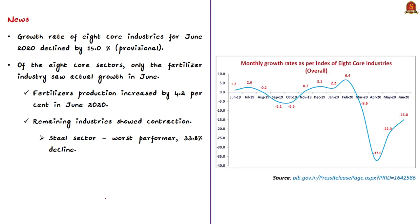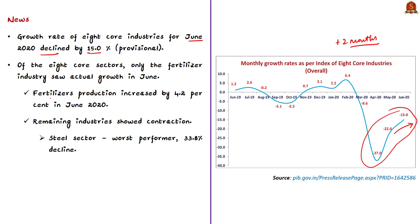The growth rate of the index of eight core industries for June 2020 declined by 15% compared to the same month in the previous year. The cumulative growth during April to June 2020-21 was about minus 24.6%, and this negative trend is expected to continue for at least two more months. The fertilizer industry was the only one which showed actual growth in June 2020.